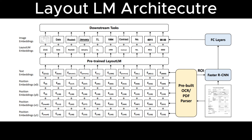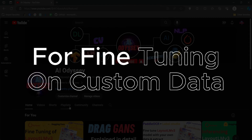LayoutLM further added two types of input embedding: a 2D position embedding that denotes the relative position of a token or word within a document — essentially a bounding box for each word or statement — and an image embedding for the scanned token image within a document.